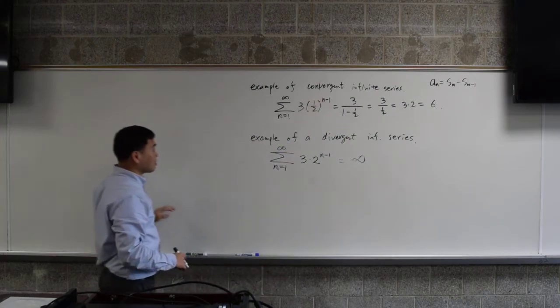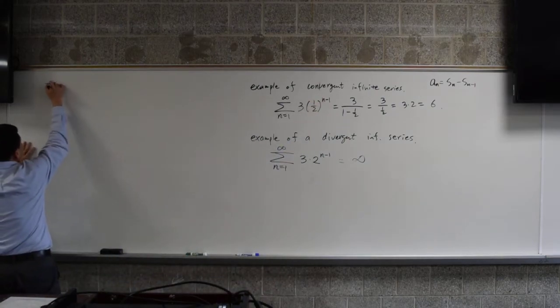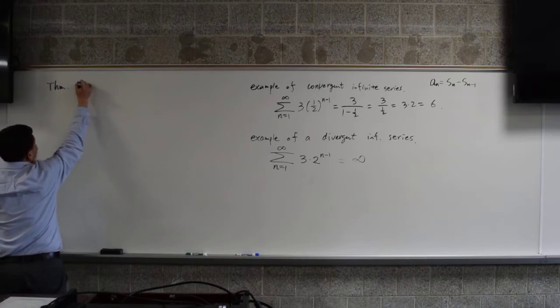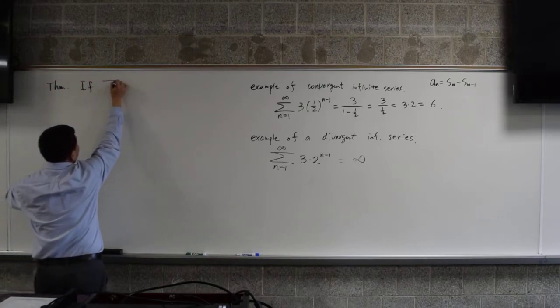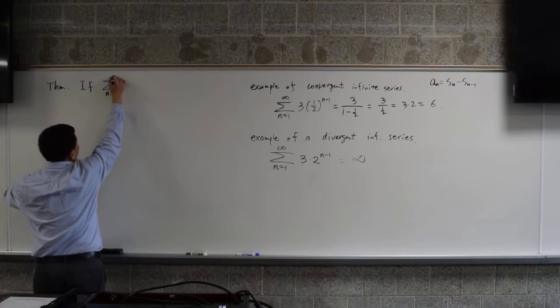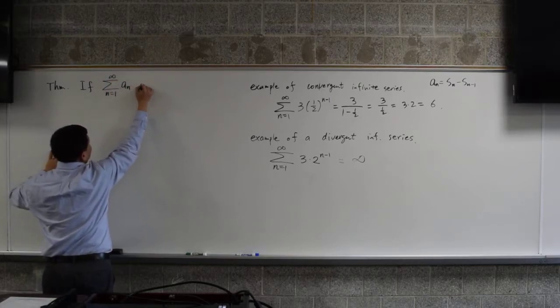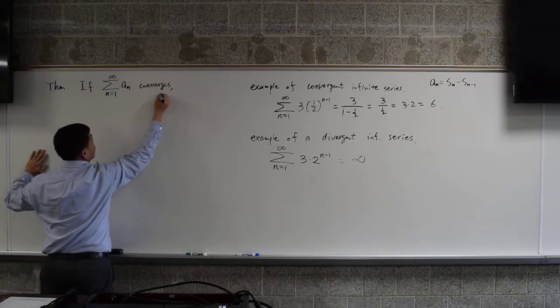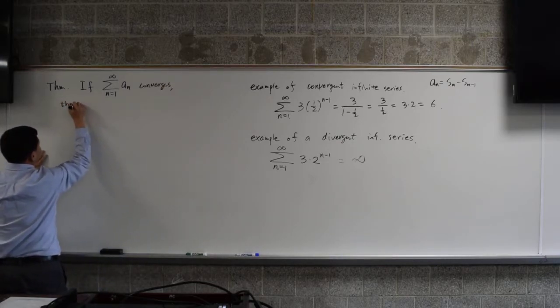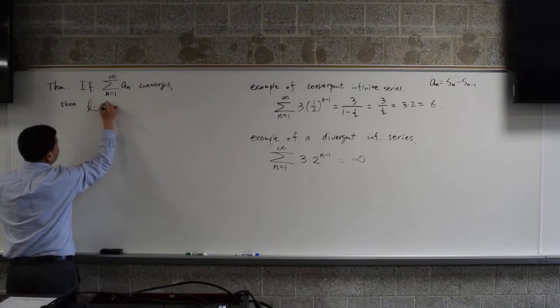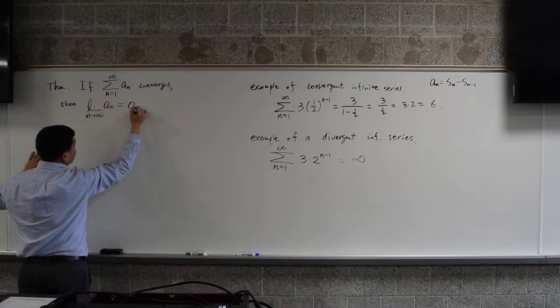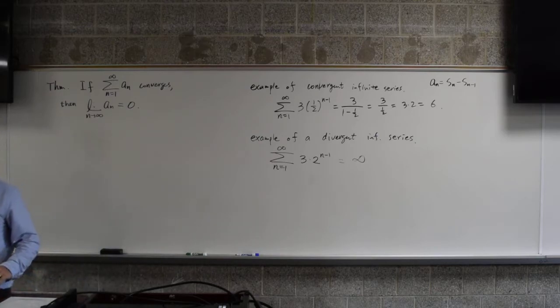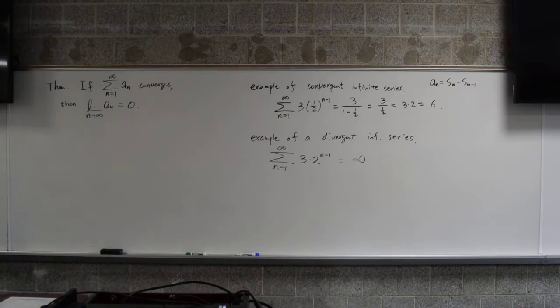So that's the first theorem I want to show. The theorem is if summation of n from 1 through infinity of a_n converges, then limit of a_n of n going to infinity is zero.